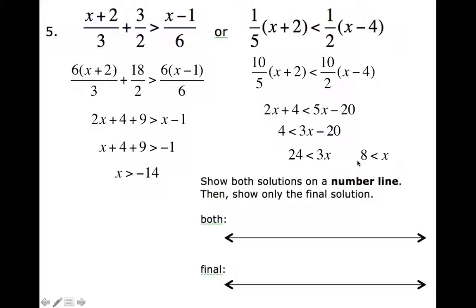Okay. As we did in the last problem, we need to put both of these final inequalities on this number line here where it says both. So let's see what both look like. So here's negative 14 and it says x is greater than negative 14. Now we have this one, 8. So here's 8 and x is greater than 8. So there we have it.